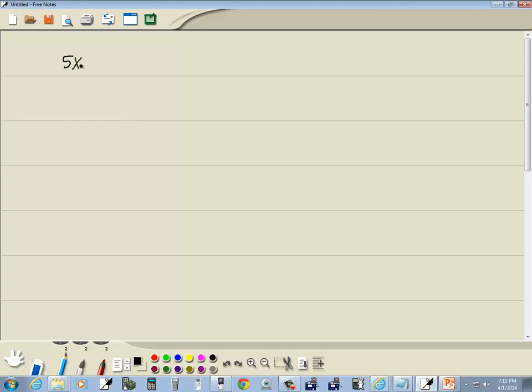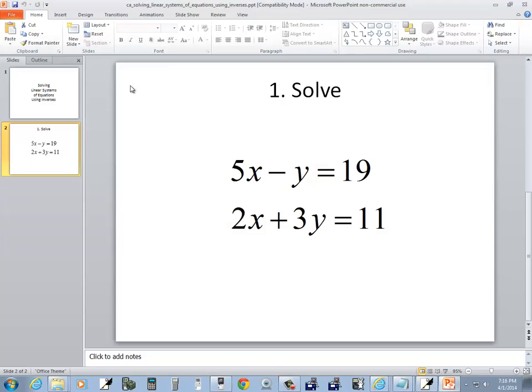We've got 5x minus y equals 19, and 2x plus 3y equals 11.